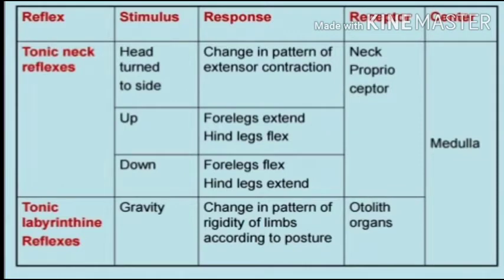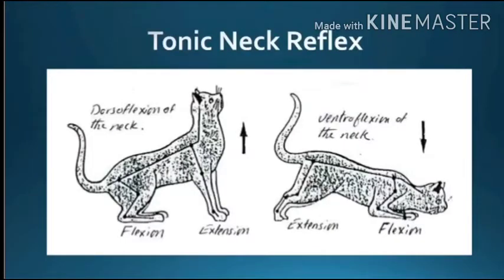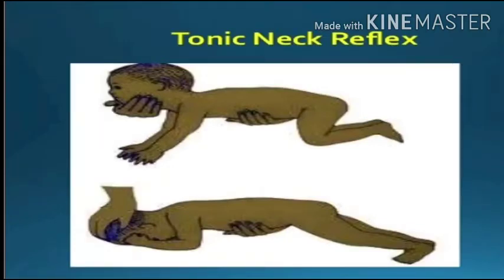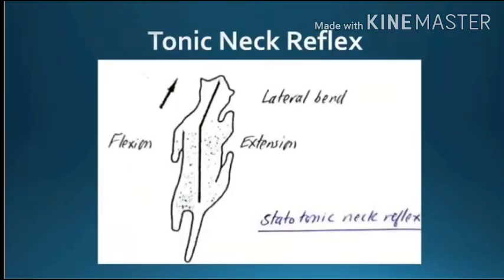Tonic neck reflex: stimulus is stretch of neck muscles due to alteration of position of the head relative to the body. Response: flexion of forelimbs and extension of hind limbs on ventral flexion of head; extension of forelimbs and flexion of hind limbs on upward turning of the head side to side. Receptors: pacinian corpuscles in ligaments of cervical joints and muscle spindles of neck muscles. Integrating center: medulla.